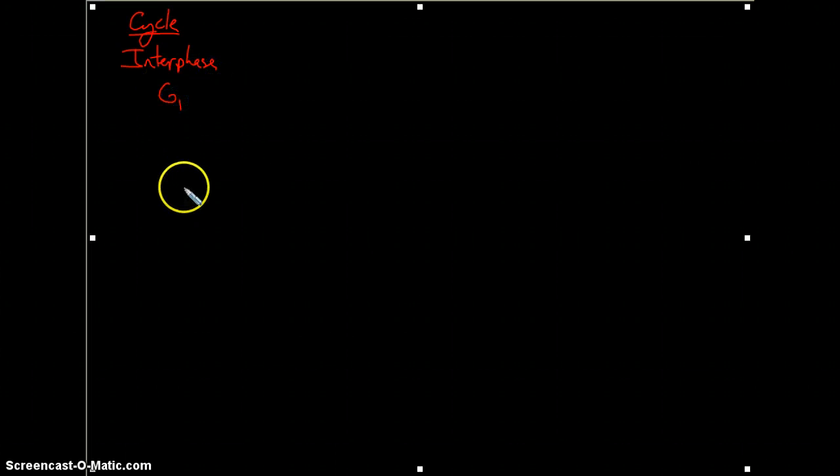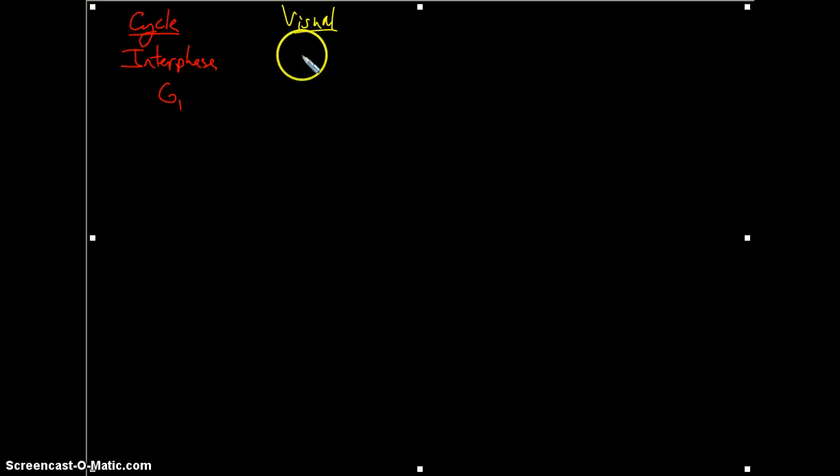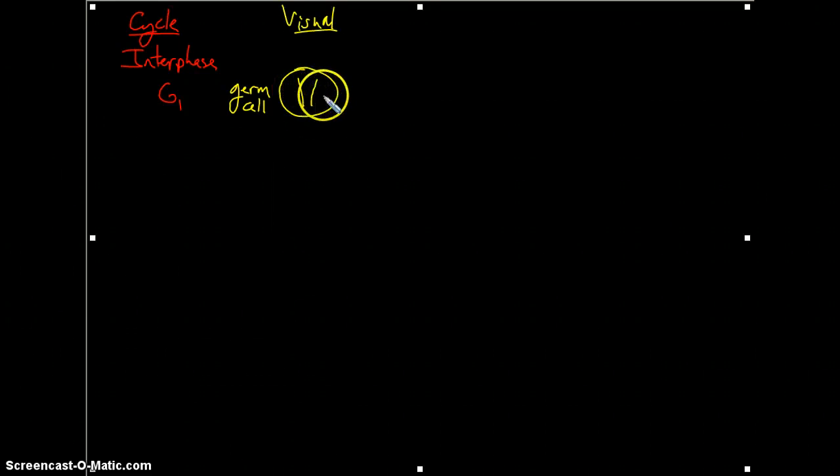We'll begin with Interphase, specifically G1 of Interphase. Now I'd like to create a visual for this. What we'll do is look at a germ cell. This germ cell will have two copies of a chromosome. So here we have two homologous chromosomes in the germ cell.